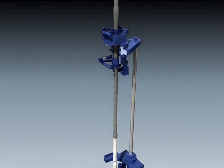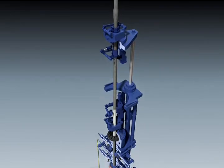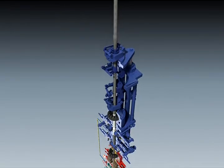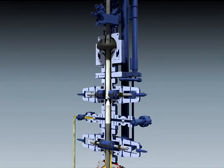The tubing and packer assembly is snubbed down through the open BOPs to a position just above the closed lower stripping rams.